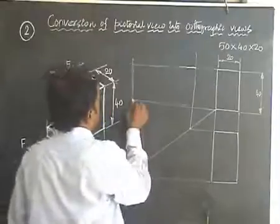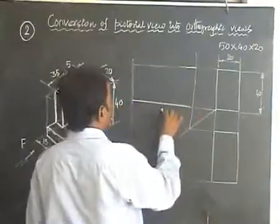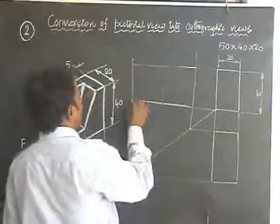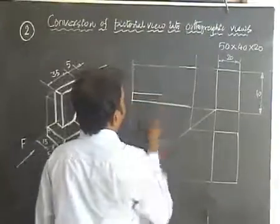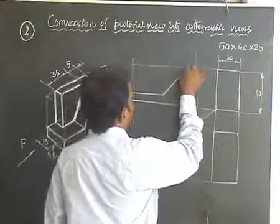Then divide this 50 into equal parts, that is 25 to 25. Add the height 5. Bring it up to 25. Join it with the end 5.